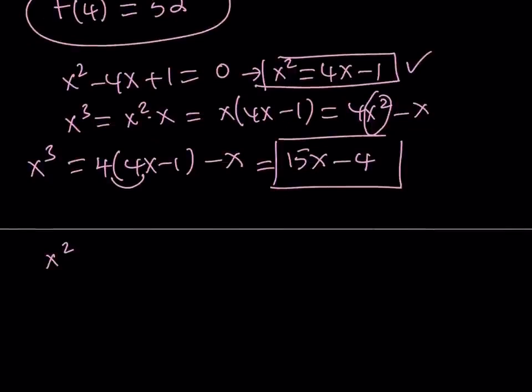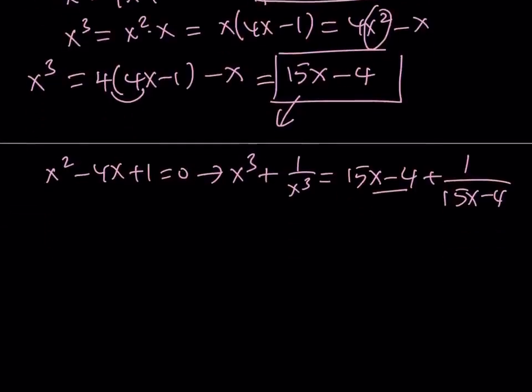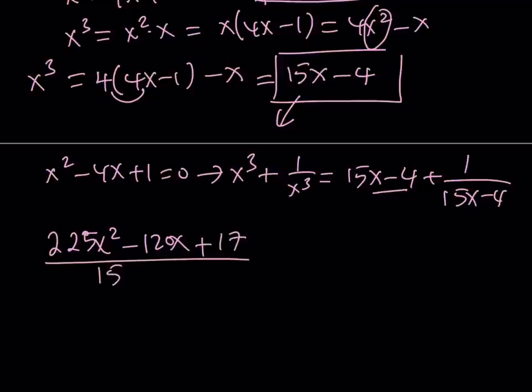So we started off with this. And now we're going to substitute this for x cubed. And remember, our expression is x cubed plus 1 over x cubed. If you replace x cubed with 15x minus 4, here and here, and then make a common denominator, multiply by itself, you're going to get 225x squared minus 120x plus 16, of course, plus 1, plus 17. And now we're going to divide it by 15x minus 4.